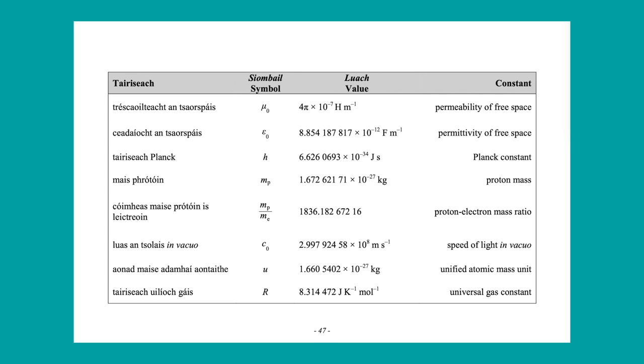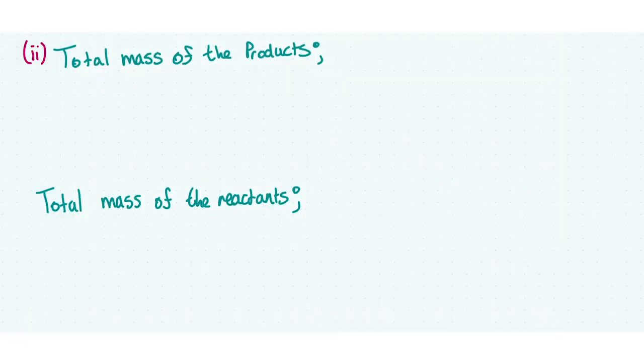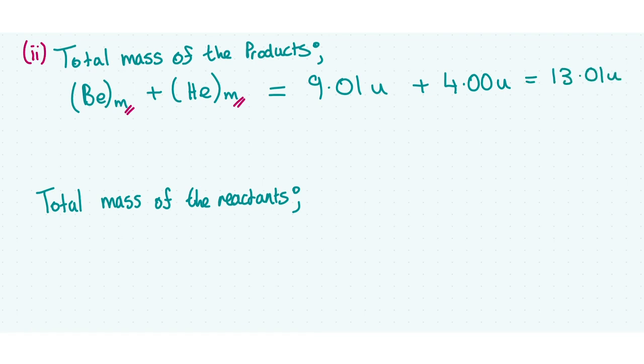The products in this event are beryllium and helium, so the total mass of the products is just going to be their sum. We know that beryllium is 9.01 unified atomic mass units and helium is 4.00 unified atomic mass units, and their sum gives us the total mass of the products, which is 13.01 unified atomic mass units. Now we're going to have to convert that into kilograms using the conversion for U.